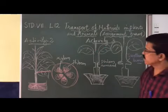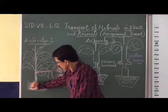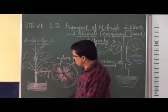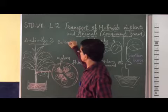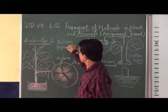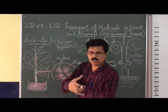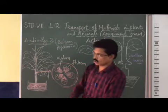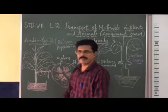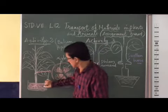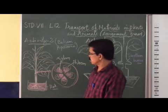In activity two, you can see in the picture an experimental investigation. You take a plant — you can take a balsam plant or peperomia, any soft-stem plant — and keep the roots clean. Then keep the roots in a pot or vessel containing red-colored water.